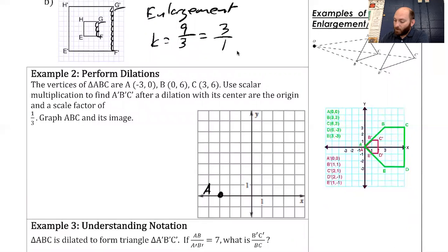The vertices of triangle ABC are A is at negative three, zero. B is at zero, six. C is at three, six. I'm going to draw my triangle in. Use scalar multiplication to find A prime, B prime, C prime after dilation with a center at the origin at a scale factor of one third. We've graphed ABC. I want to graph its image now.